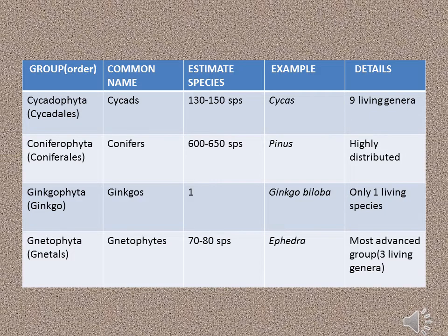Most Gymnosperms are grouped into four orders. The table shows some details. The orders are Cycadophyta, Coniferophyta, Ginkgophyta, and Gnetophyta. The common name of Cycadophyta is Cycads. They have an estimated 130 to 150 species. An example is Cycas, and they have nine living genera.